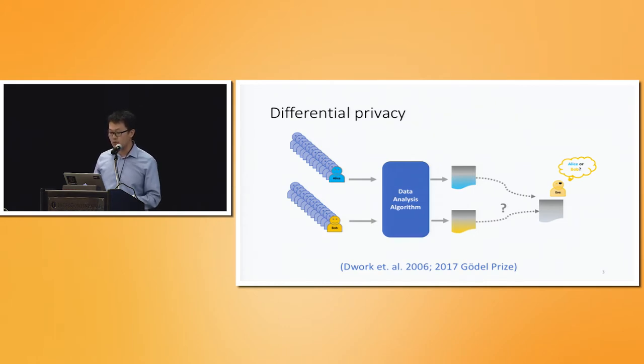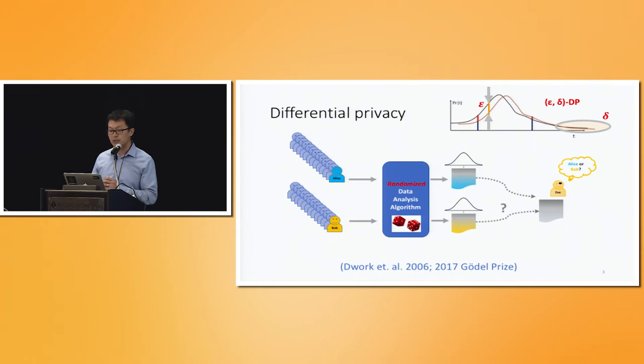So the idea of differential privacy is to use randomization to create the kind of information theoretic hardness so no adversary is able to distinguish between two datasets that differ by exactly one data point. So by randomizing the algorithm, we induce distributions of the output, and if the two distributions satisfy certain conditions, which we call epsilon-delta differential privacy, meaning that the two distributions are very similar to each other in a multiplicative sense with epsilon modulo small probability of failure delta, then we argue that it's impossible for any adversary to figure out individual information about the dataset.